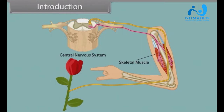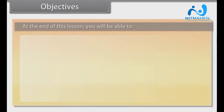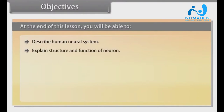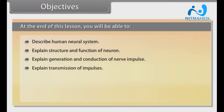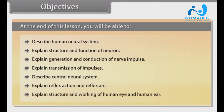Throughout this module, we learn neural control and coordination. At the end of this lesson, you will be able to: describe the human neural system, explain structure and functions of a neuron, explain generation and conduction of nerve impulse, explain transmission of impulses, describe the central neural system, explain reflex action and reflex arc, and explain structure and working of the human eye and human ear.